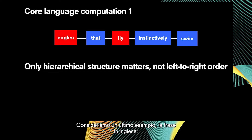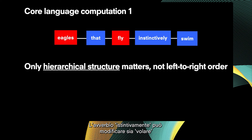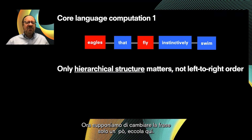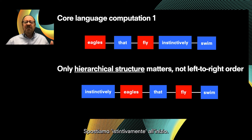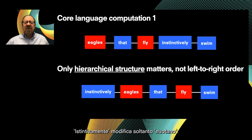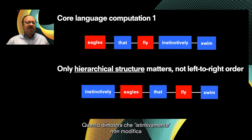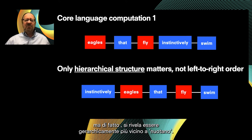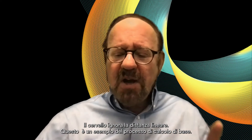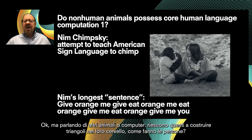Consider one final example: the sentence 'Eagles that fly instinctively swim' is ambiguous — the adverb 'instinctively' can modify either 'fly' or 'swim.' Now if we move 'instinctively' to the front, the sentence is no longer ambiguous: 'instinctively' can only modify 'swim.' This shows that 'instinctively' does not modify the verb it is linearly closest to ('fly'), but rather the one that is hierarchically closest to it ('swim'). The brain ignores linear distance. That's core computation one.